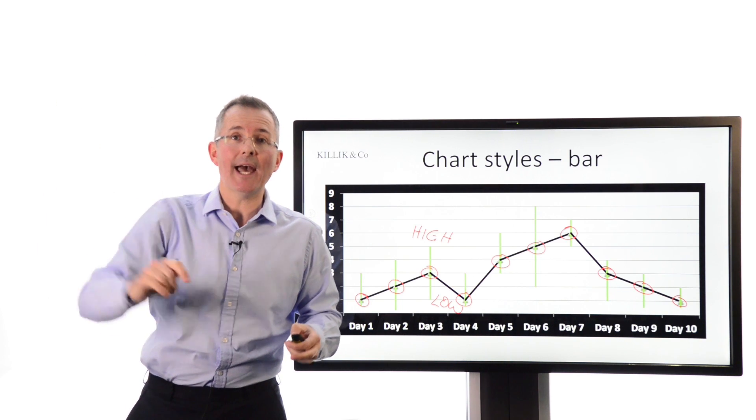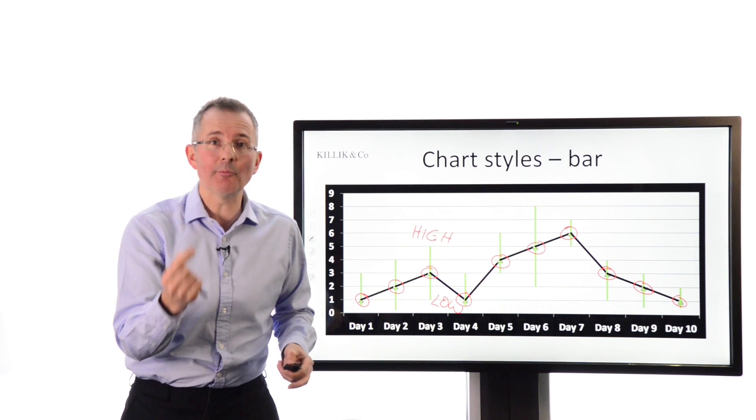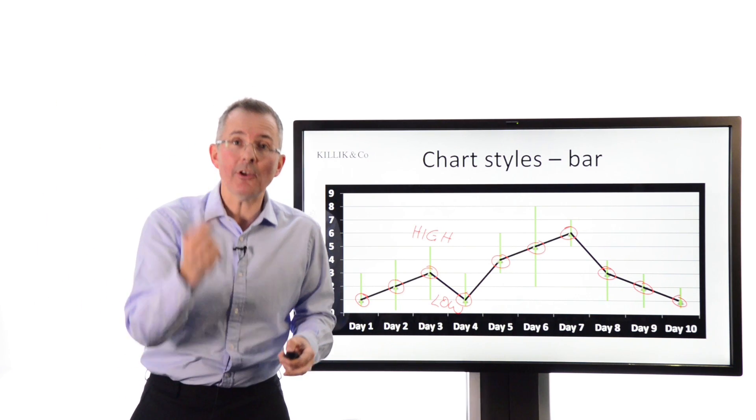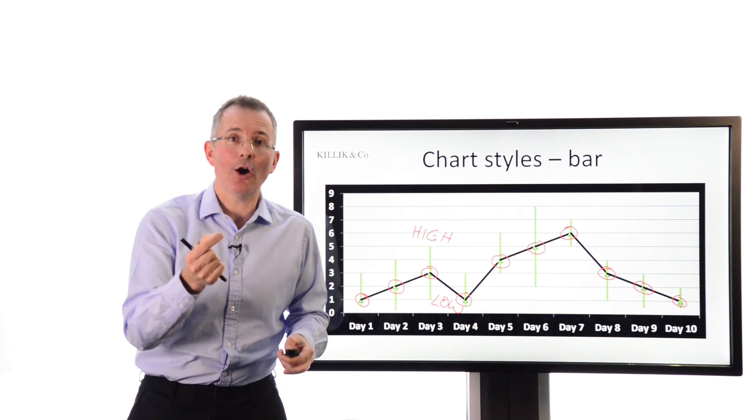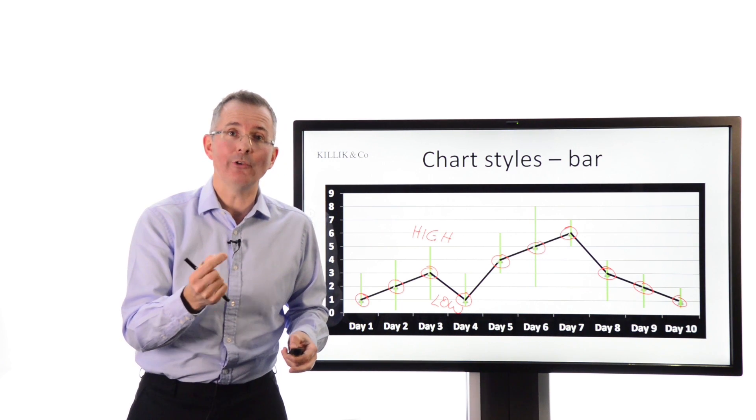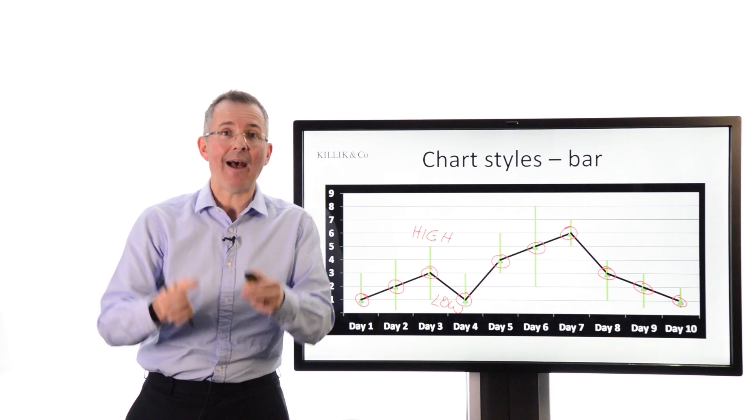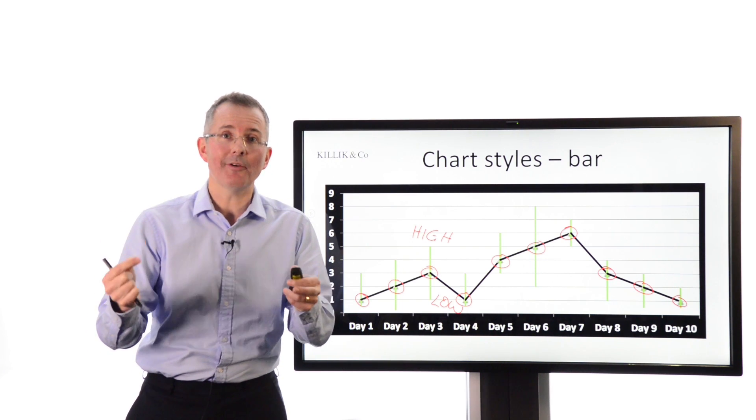Now, why is that useful? So it's the highest price achieved in that day and the lowest price achieved in that day. Because don't forget, the stock will be moving up and down during the day. And basically, the closing price is just one price. So this is telling me some information about how representative was that closing price of what actually happened during the day. In other words, how volatile was the price over the day.